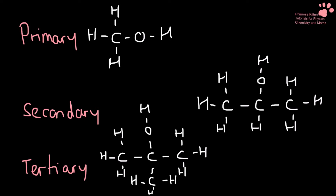When oxidised, primary, secondary and tertiary alcohols behave very differently. The first thing we need to do is work out the difference between them, and you do that by looking at the carbon that the hydroxide group is attached to. You need to work out whether it has either two or three hydrogens — making it primary — one hydrogen making it secondary, or no hydrogens making it a tertiary alcohol.